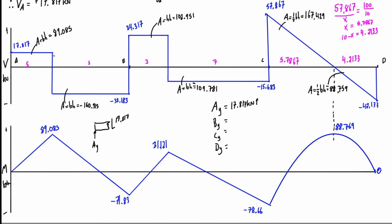An upward jump in the shear force diagram indicates an upward reaction force. At B: negative 32.183 plus 34.317 gives BY equal to 66.5 kN upward. At C, taking the sum of the two shear values across the support: 15.683 plus 57.867 gives CY equal to 73.55 kN upward.